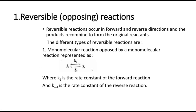We begin with the first one: reversible reactions. These are the reactions which occur in forward as well as reverse directions. In other words, the products recombine resulting in the formation of the original reactants. Under reversible reactions, we have various subtypes which depend upon the molecularity of the reaction — that is, the number of molecules of the reactants and products. We begin with the most simplest one: a monomolecular reaction being opposed by a monomolecular reaction.